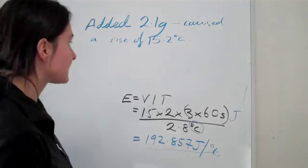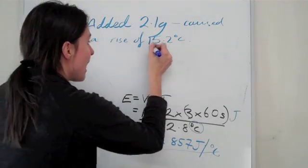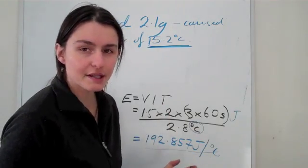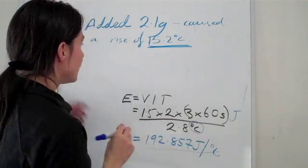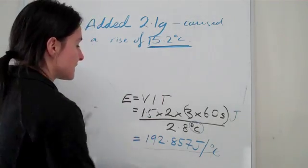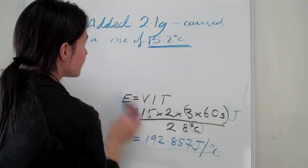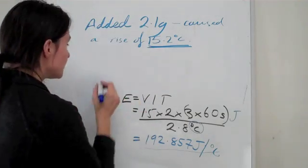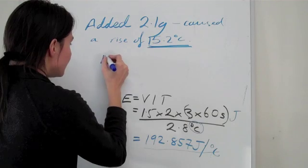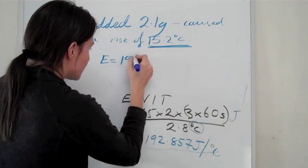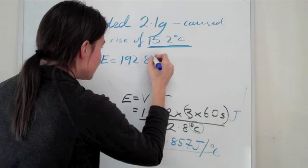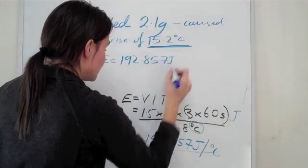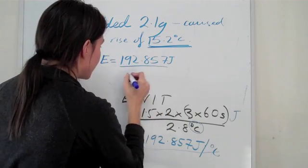Basically what we know right now is we know that we have a calibration factor and we also know how much temperature that pizza caused the calorimeter to increase by. So what we can do now is we can work out the energy content of the pizza because we know that the energy of the calorimeter is 192.857, well this is not really energy anymore, this is the calibration factor.